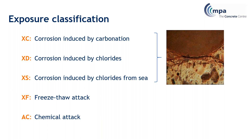XC is corrosion of the reinforcement induced by carbonation. XD is corrosion induced by chlorides. XS is corrosion induced by chlorides from the sea - seawater has other elements that might make a difference to corrosion. There are different levels of these exposure classifications: XC1 is internal concrete inside a building, mildly affected by carbonation. When you have alternate wet-dry conditions, the exposure class needs to be increased. BS 8500 provides the information to help you work out what exposure class you have.